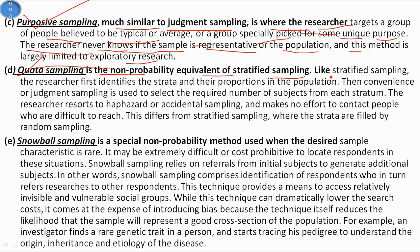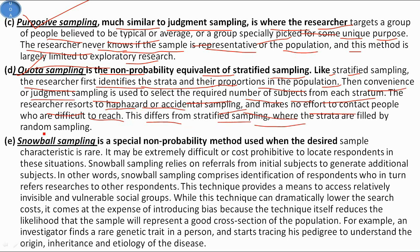Quota sampling is the non-probability equivalent of stratified sampling. Like stratified sampling, the researcher first identifies the strata and their proportions in the population, then convenience or judgment sampling is used to select the required number of subjects from each stratum. The researcher resorts to haphazard or accidental sampling and makes no effort to contact people who are difficult to reach. This differs from stratified sampling, where the strata are filled by random sampling.